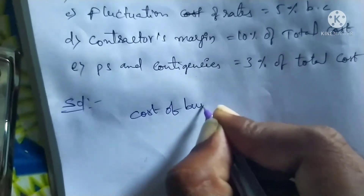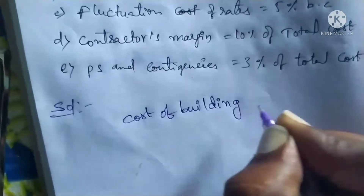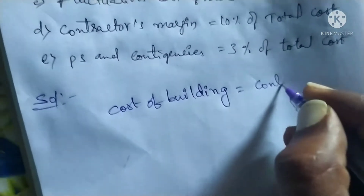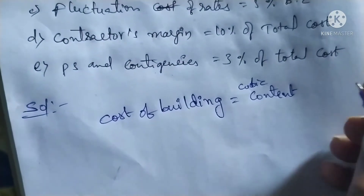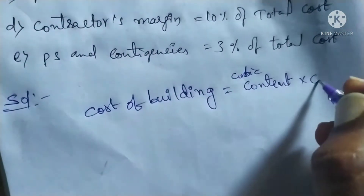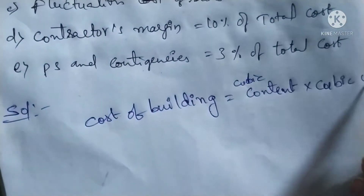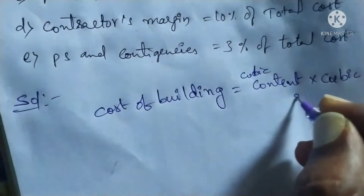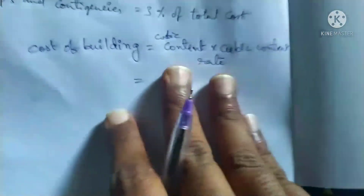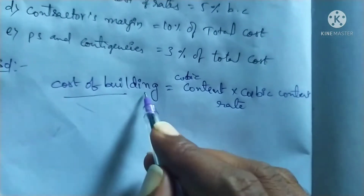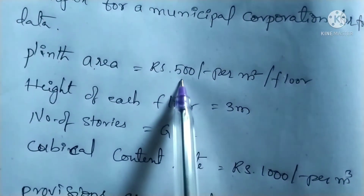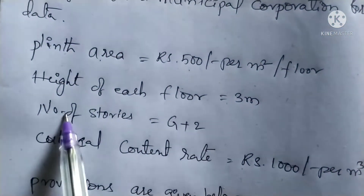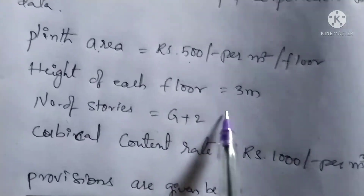The cubic content is calculated from the plinth area. Cubic content equals plinth area into height of each floor into number of floors. Plinth area is 400, height of each floor is 3 meters, and G plus 2 means 3 floors total.